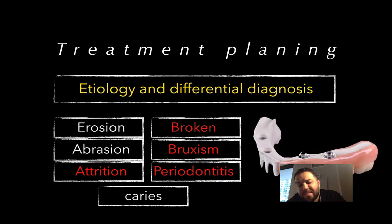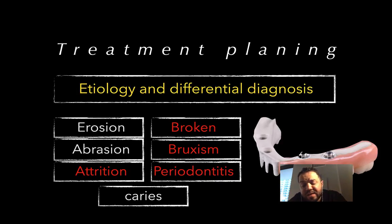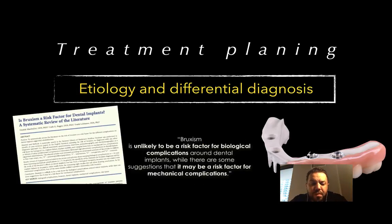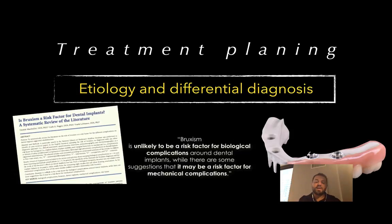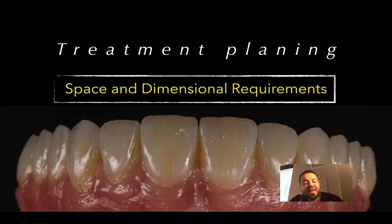When we compare high-risk patients to medium and low-risk patients, the treatment is more difficult. Attrition and bruxism are important prosthetic high-risk factors. Previously broken bridges or restorations are a hint that we need to deal with the case differently. Bruxism is unlikely to be a risk factor for biological complications, but it is a risk factor for mechanical complications — which is the focus of this lecture.